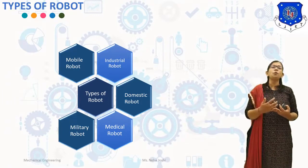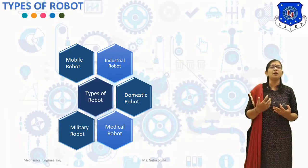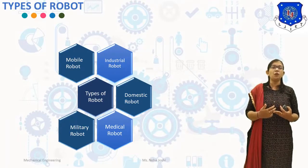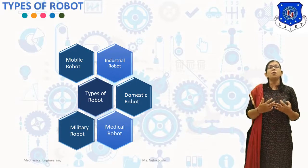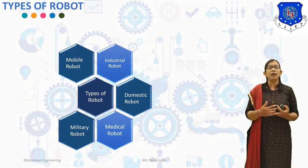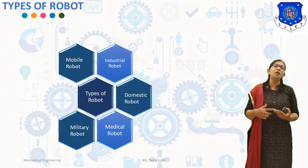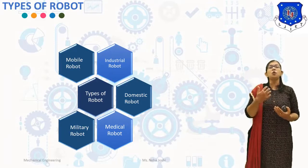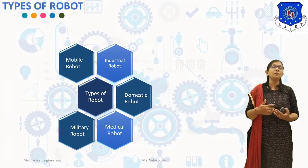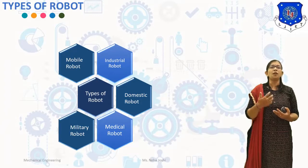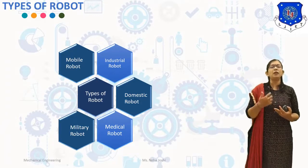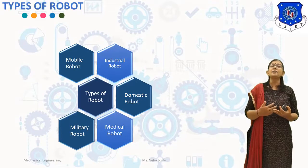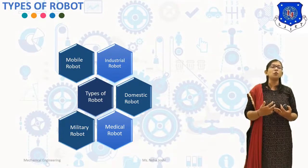Mobile robots are able to move around in their environment and are not fixed to one physical location. Industrial robots are used in industrial manufacturing environments like building, material handling, painting, and other applications. Domestic or household robots are used at home, such as robotic vacuum cleaners, robotic pool cleaners, which are examples of robots used in households.